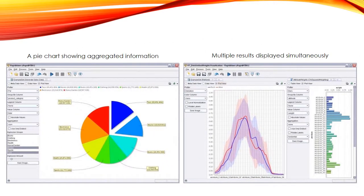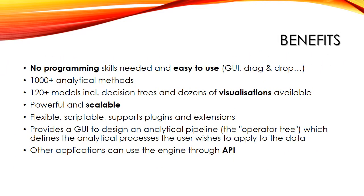Here you can see two screenshots of RapidMiner. On the left, we can see a pie chart showing aggregated information, and that is also the part where you can set up all the filters and additional settings such as explosion groups. On the right, you can see that users can view more than one result at a time because it uses tabs, so you can have different results, different tests, different analytics, and compare them at the same time.